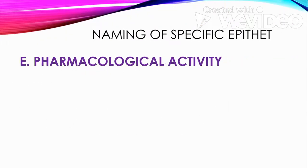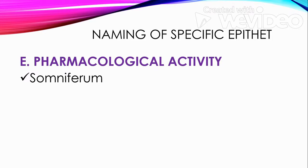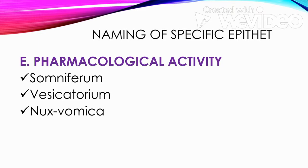Some organisms are also named based on pharmacological activity. Somniferum means the plant can induce sleeping. Vesicatorium means the plant can cause blistering. Nox vomica means the plant can induce vomiting. And purga means the plant is a purgative.